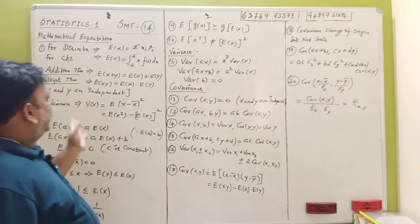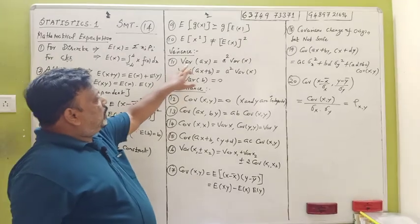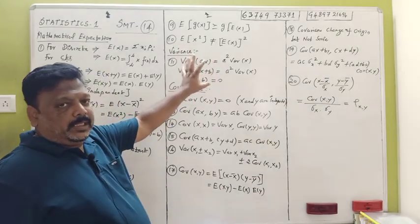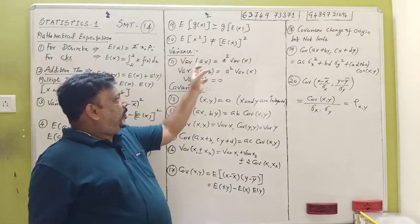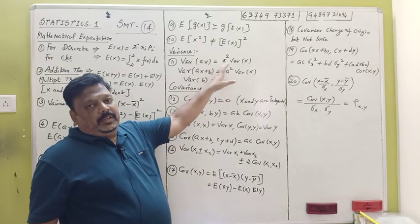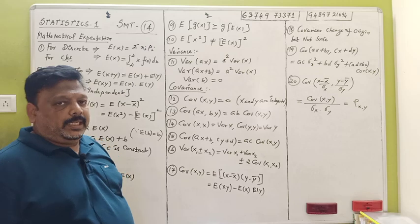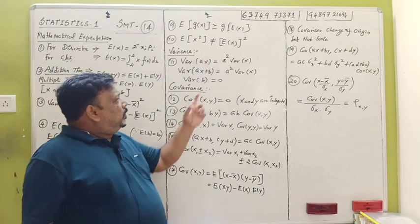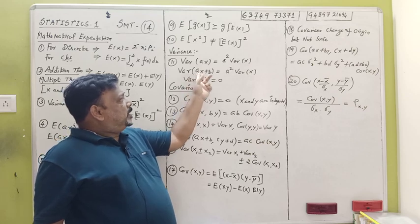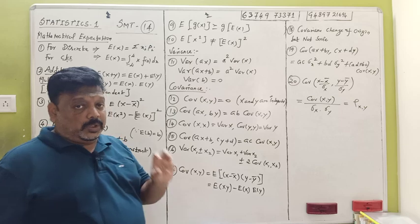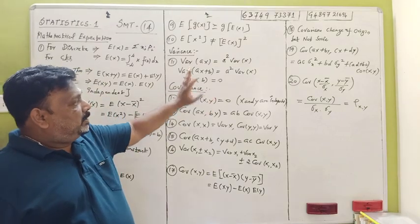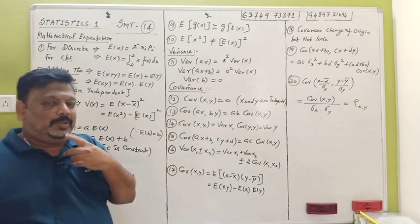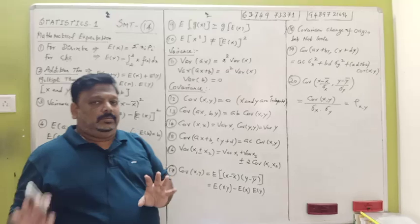The variance of aX: the constant a will become a squared. For example, if you have the variance of 5X, then 5 squared = 25 times the variance of X. So the variance of aX is a² · Var(X). The variance of aX + b is also a² · Var(X), because the constant b contributes 0 to the variance.